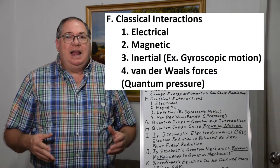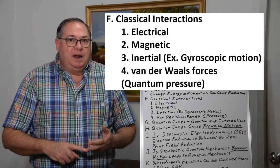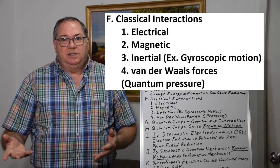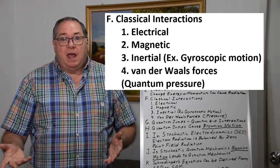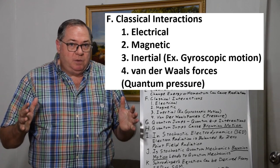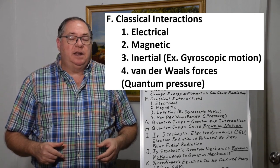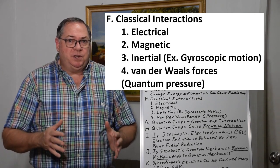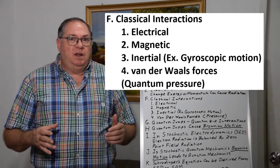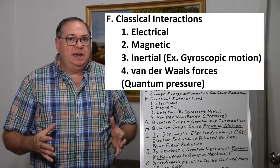We have classical interactions of electrical forces, magnetic forces, inertial interactions such as gyroscopic effects, and also van der Waals forces, which are quantum field-produced pressures that put pressure on bodies on all sides and can push them. All these things are involved in a possible orbit, but I'm not going to go into detail on that.